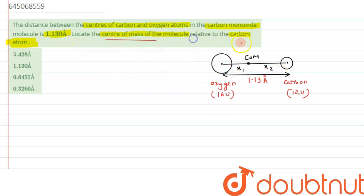And we have been asked to calculate the center of mass from the carbon atom, that is we are interested in finding the value of x2. So this is the case of two body which is separated by some distance.